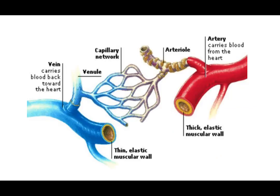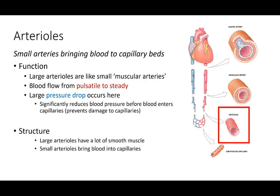Arterioles are the smaller branches going within the tissue beds, just before the capillaries. They are an extension of the muscular arteries. Right before we get to the capillary beds, we don't want pressure surges, so arterioles move blood from a pulsatile nature to steady flow.